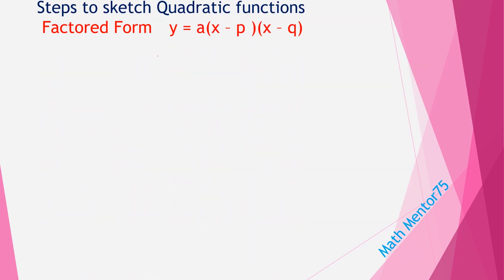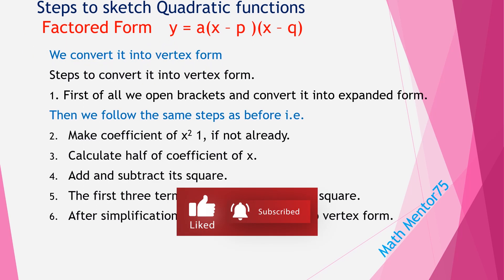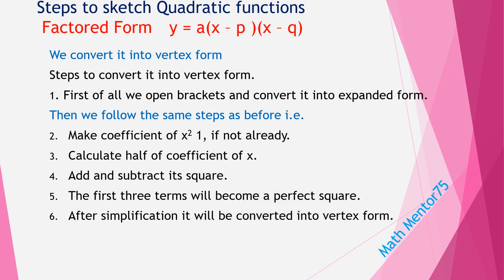Now we are going to see how to sketch a quadratic equation if it is in factored form. The approach is to convert it into vertex form. First, open the brackets and convert to expanded form. Once in expanded form, follow the same steps as before: make the coefficient of x² equal to one, find half of the coefficient of x, add and subtract its square. The first three terms again become a perfect square, and after simplification we have vertex form.